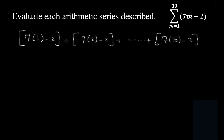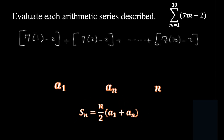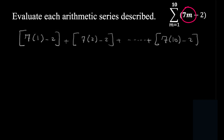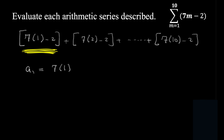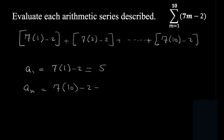To do that faster, since this is an arithmetic series, we can find the first term, the last term, and the number of terms, and apply the formula. You get the first term by replacing m by 1: a1 equals 7(1) minus 2, which is 7 minus 2, which is 5. The last term an equals 7(10) minus 2, which is 70 minus 2, which is 68. The number of terms n we write as 10 minus 1 plus 1.